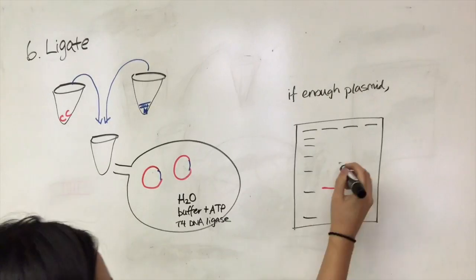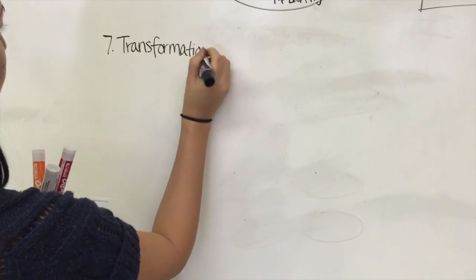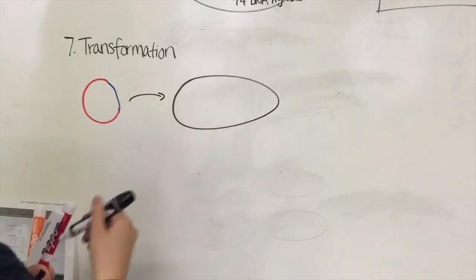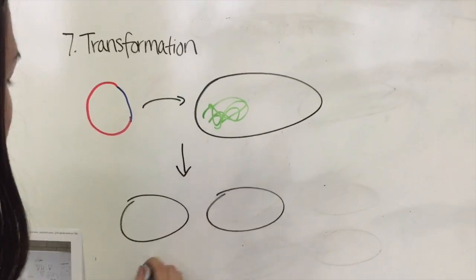However, if there is not enough DNA, this check can be performed after transformation. The seventh step is transformation. After the ligation step, transformation can be used to amplify the DNA plasmid, in which the plasmid is introduced into bacteria where it can be quickly replicated.